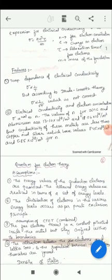The values of N for zinc and aluminum are 13.10 into 10 to the power 28 per meter cube and 18.06 into 10 to the power 28 per meter cube.